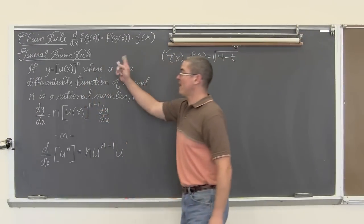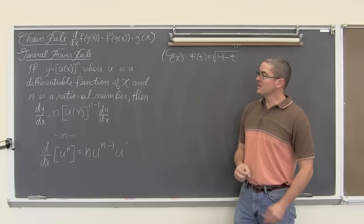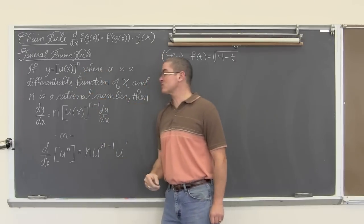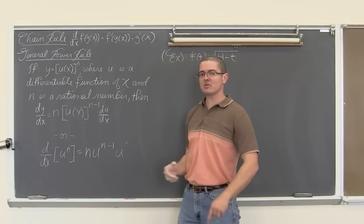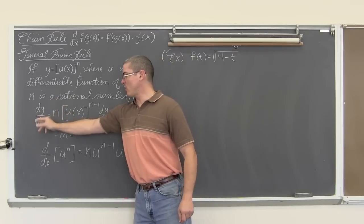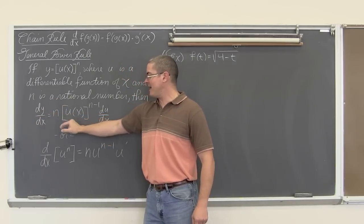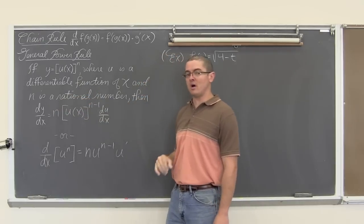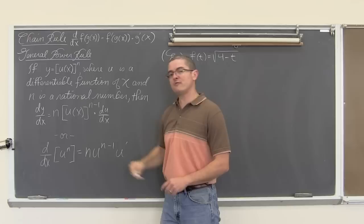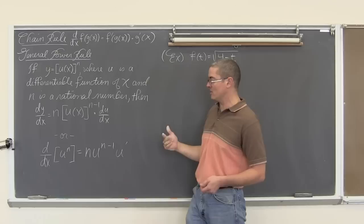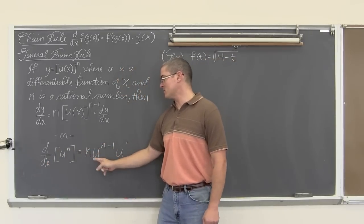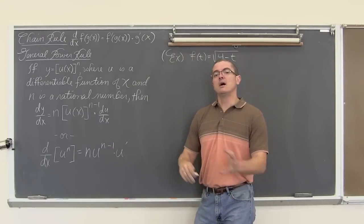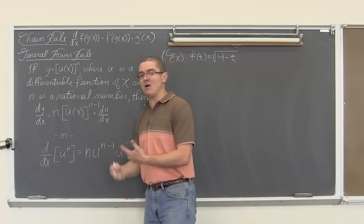That last example follows what is called the general power rule. It says if u is equal to a function inside of a power — where u is a differentiable function of x and n is a rational number — then the derivative of y with respect to x is equal to n times u of x to the n minus 1 power, multiplied by the derivative of function u with respect to x. Or in simpler terms, the derivative of u to the n is equal to n times u to the n minus 1 times u prime.